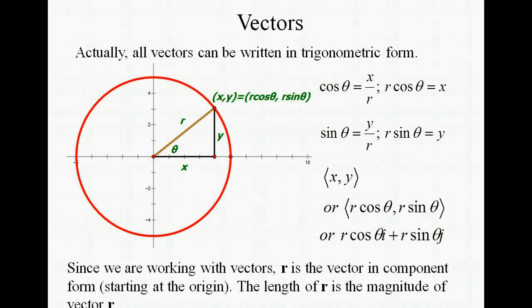Since we are working with vectors here, r is the vector in component form. In other words, that it has a starting point at (0,0) and (x,y) is its endpoint. The length of r is also called the magnitude of the vector r.